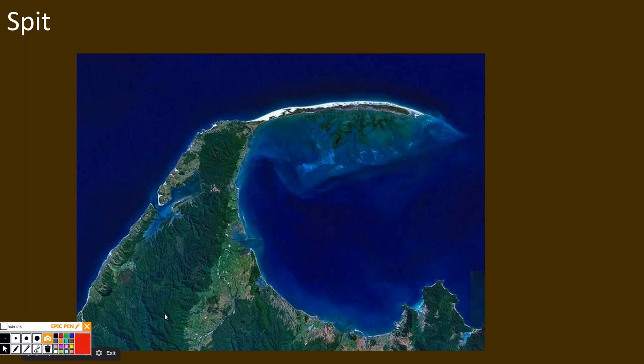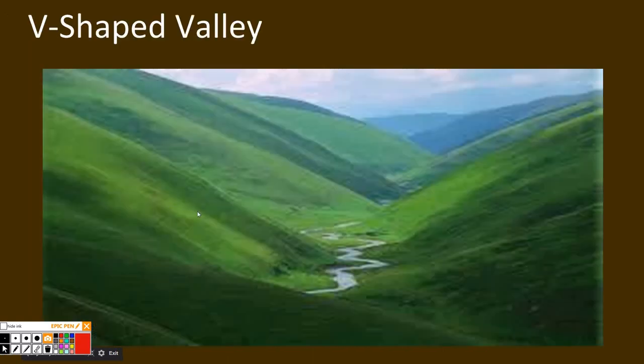A spit forms during water erosion when a water current moves along the coastline, and it drops off or deposits the eroded and weathered rock in a single area perpendicular to the coast.